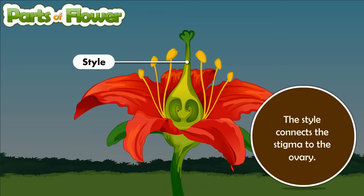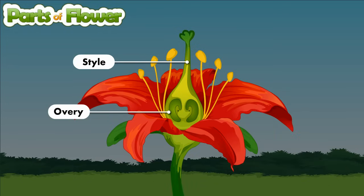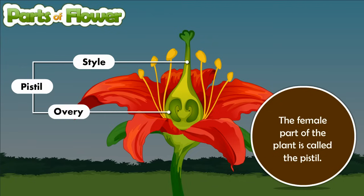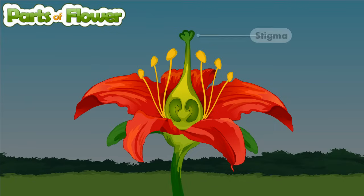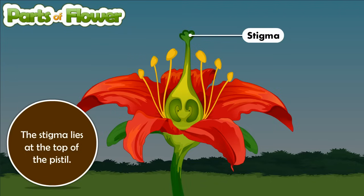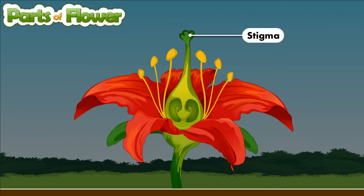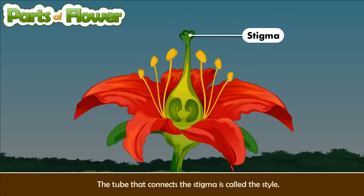The female part of the plant is called the pistil. The stigma lies at the top of the pistil. The style connects the stigma to the ovary, and the tube that connects the stigma is called the style.